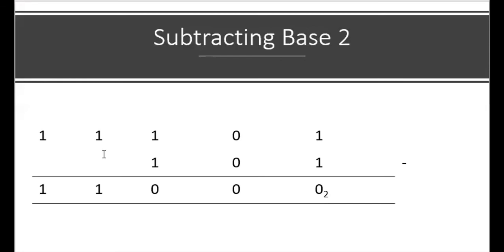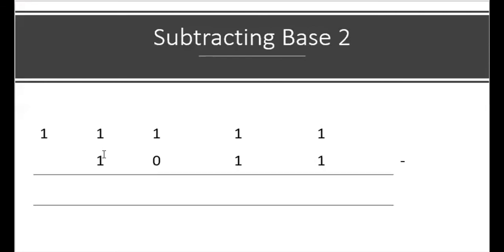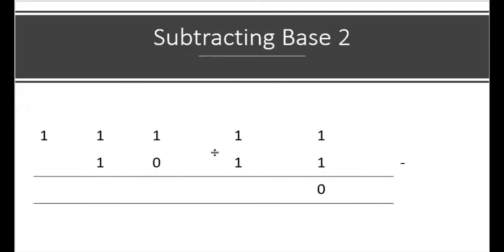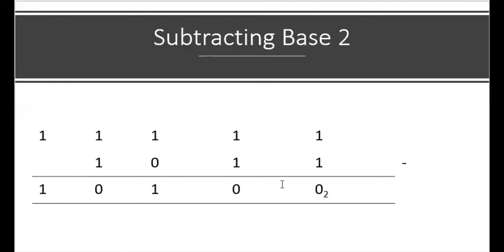Next: 11111 minus 1011. Starting from the right: 1 from 1 is 0. Then 1 minus 1 is 0. Then 0 from 1 is 1, since there's nothing to take away. Then 1 from 1 is 0. The final 1 has nothing to subtract from it, so we place it back. Our answer is 10100 in base 2.